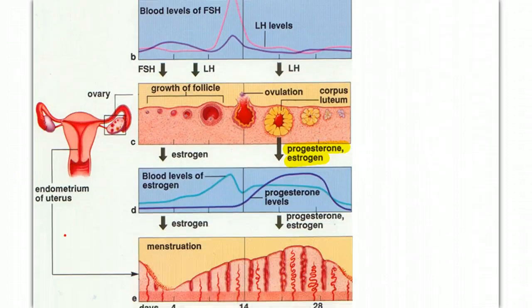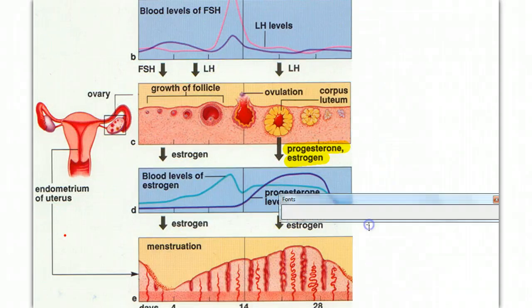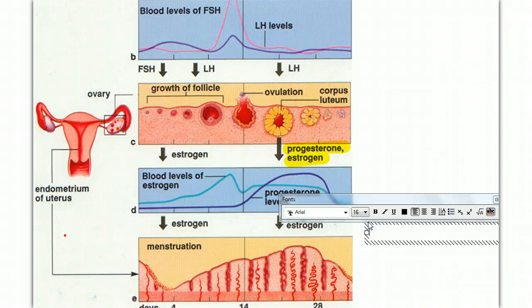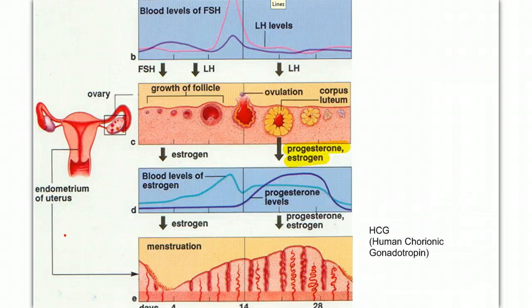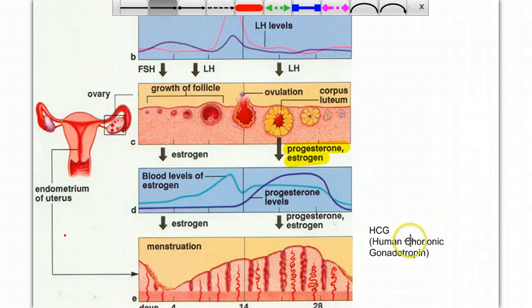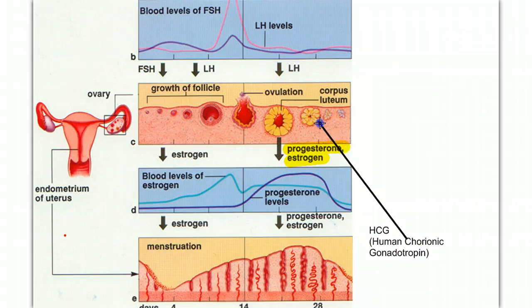If, however, a pregnancy does occur, the embryo will secrete a hormone called HCG, human chorionic gonadotropin. The human chorionic gonadotropin hormone will keep stimulating the corpus luteum so it doesn't break down, so we keep our levels of progesterone and estrogen high, and we keep the endometrium wall thick to sustain the pregnancy.